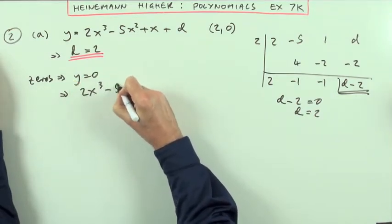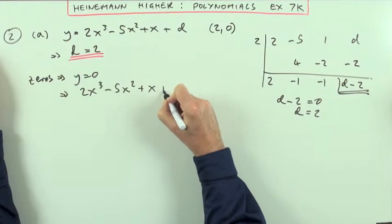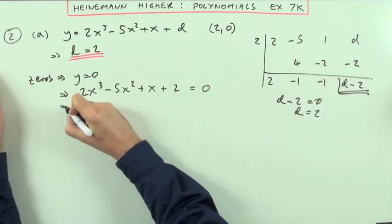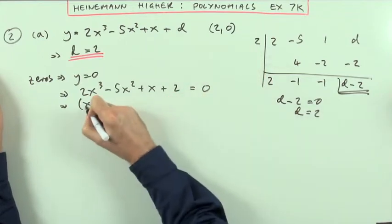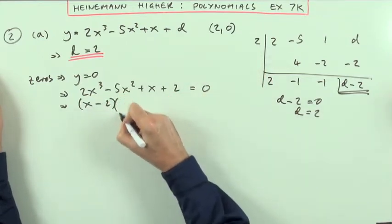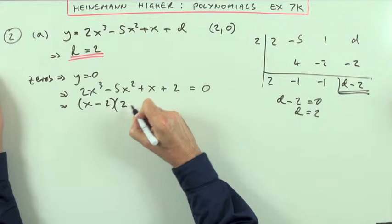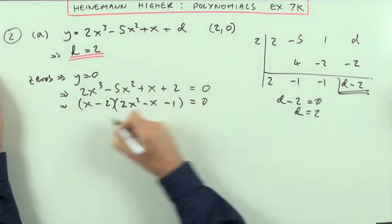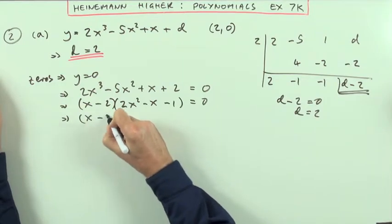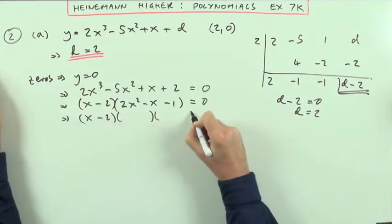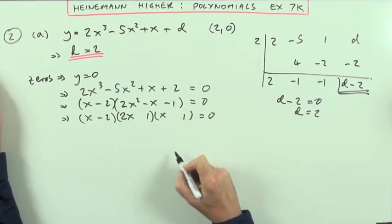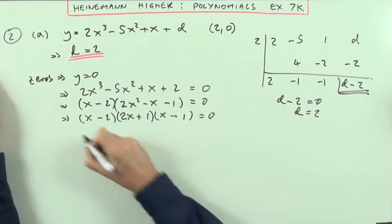That means that 2x cubed minus 5x squared plus x plus 2 should equal 0. And I've already got it worked out here. I've already got x minus 2 as one of the factors, and the quotient, the remaining factor, will be 2x squared minus x minus 1, which I can then just factorise myself. So given that it does factorise, that must be 2x times x, that must be 1 times 1, the negative must go to the larger, and that must be the opposite.